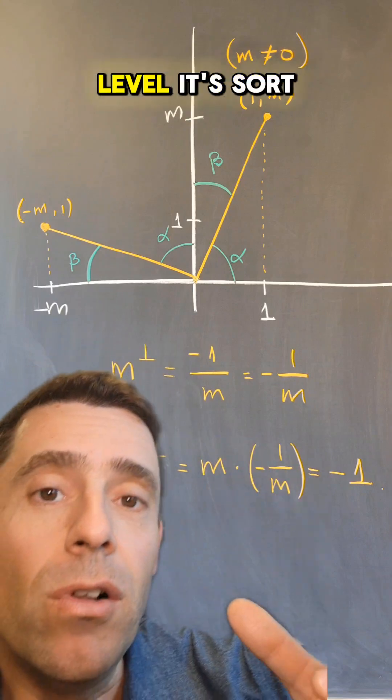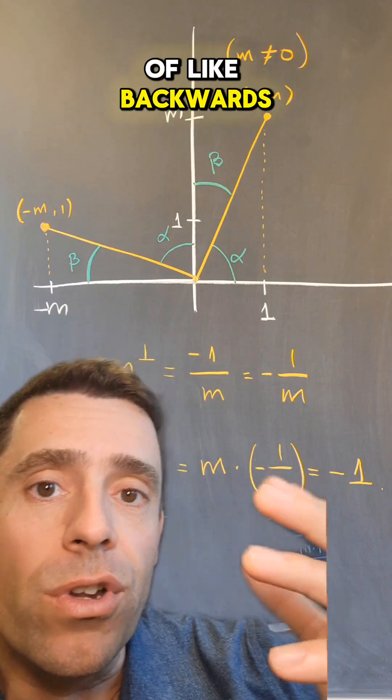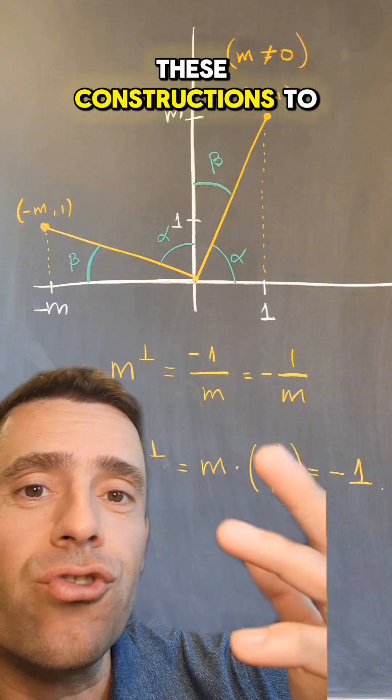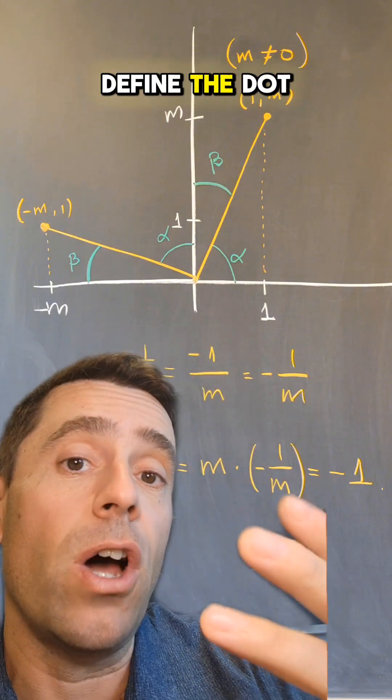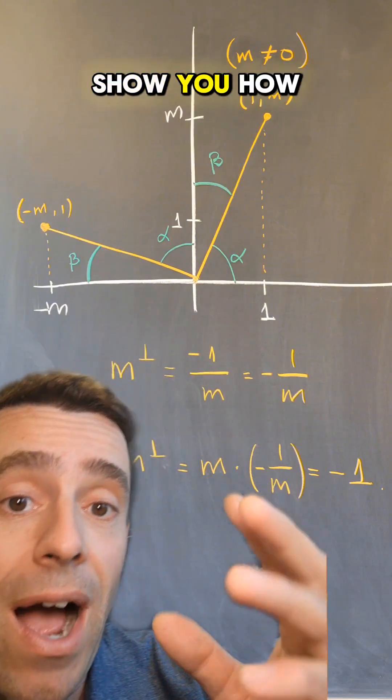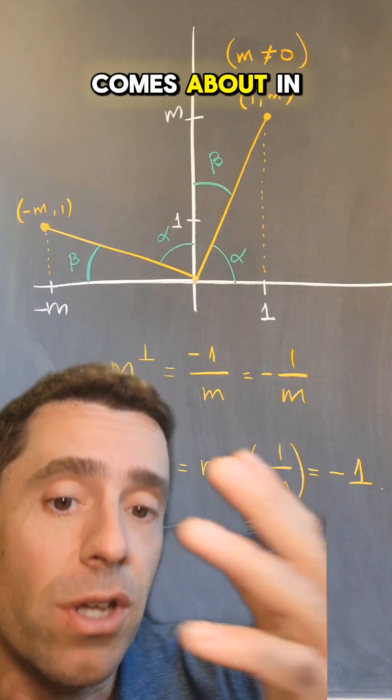But at this level, it's sort of like backwards. You actually use these constructions to define the dot product, so let me show you how the dot product comes about in this setting.